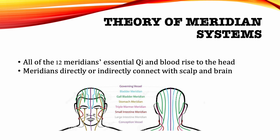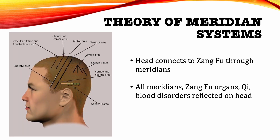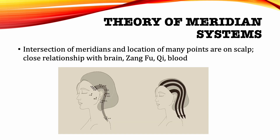Theory of Meridian Systems. The scalp and head have a close relationship with the meridians. All of the 12 meridians, essential qi and blood, rise to the head. The meridians directly or indirectly connect with the scalp and brain. The head also connects to the zangfu through the meridians. All of the meridians, zangfu organs, qi, and blood disorders are reflected on the head. Thus, we can diagnose and treat disease using the scalp. Scalp acupuncture is effective because the intersection of many meridians and the location of many points are on the scalp. Therefore, it has a close relationship with the brain, zangfu, qi, and blood.